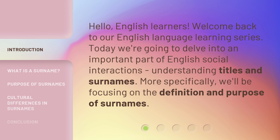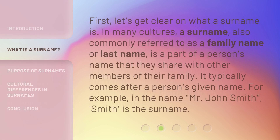More specifically, we'll be focusing on the definition and purpose of surnames. First, let's get clear on what a surname is. In many cultures, a surname — also commonly referred to as a family name or last name — is a part of a person's name that they share with other members of their family. It typically comes after a person's given name. For example, in the name Mr. John Smith, Smith is the surname.